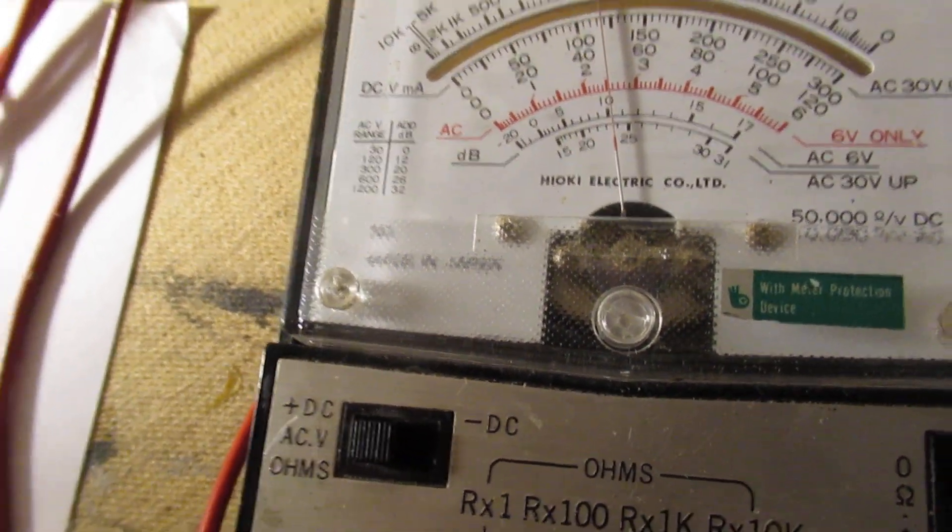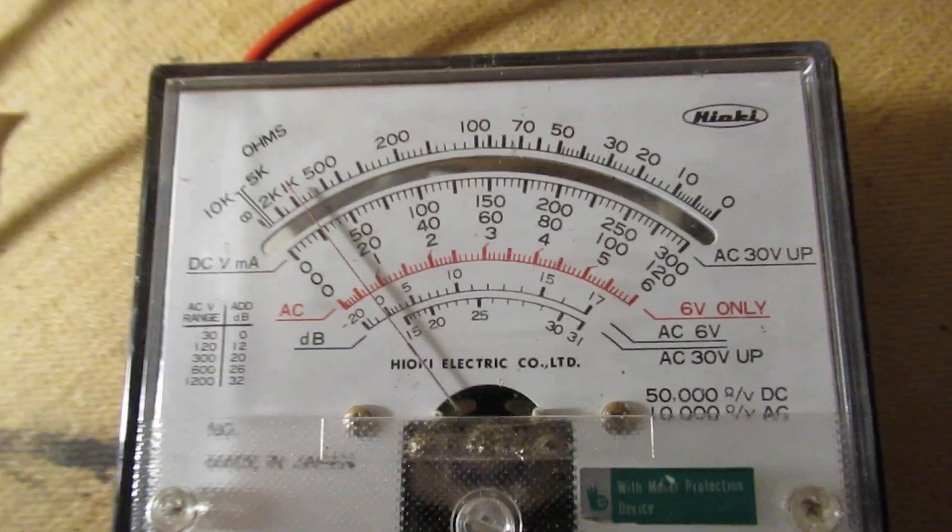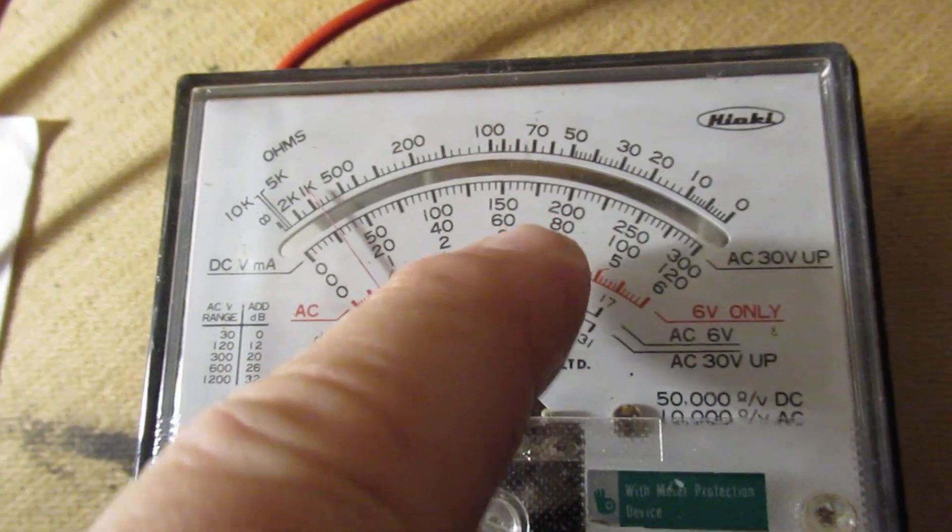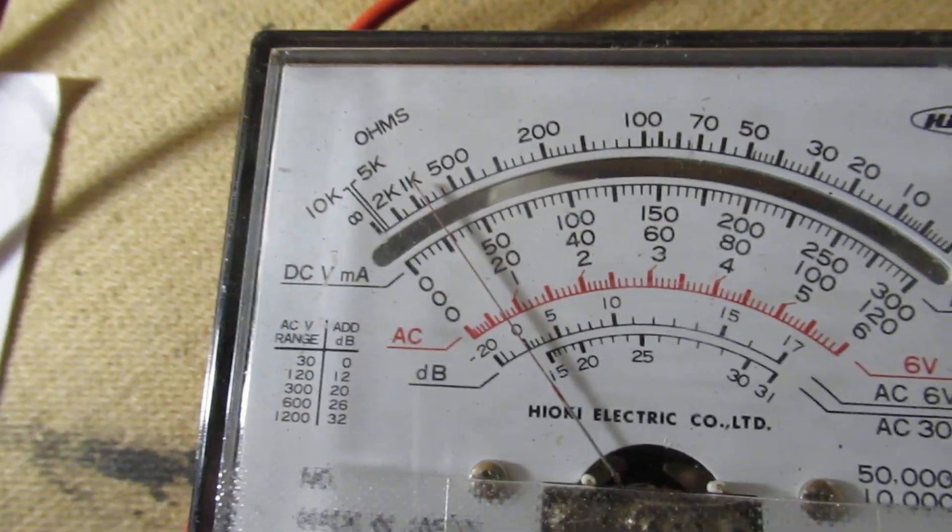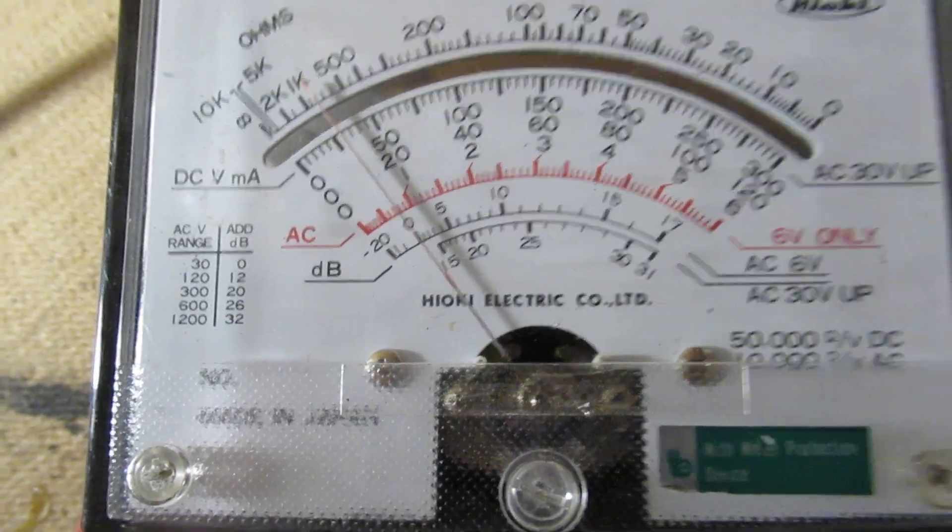Now I go to the 3-volt scale of my meter. Here you see 3 volts, 1 volt, 0.5 volts, 0.25 volts.